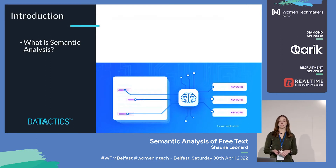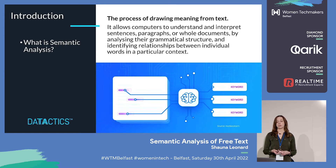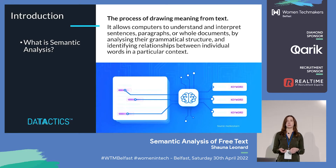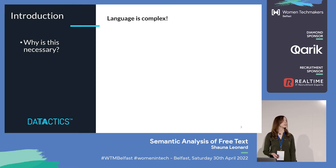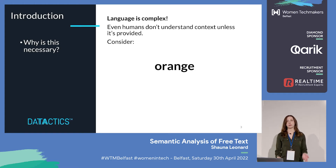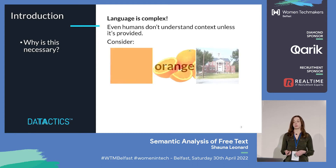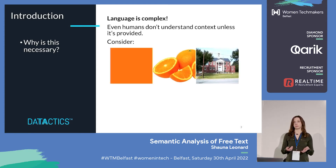What is semantic analysis? The high-level meaning is that it's the process of drawing meaning from text. It allows computers to understand and interpret sentences, paragraphs, or whole documents by analysing the grammatical structure and identifying relationships between words. Why is it important? It's because language is complex. Even humans don't understand context unless it's provided. For example, the word 'orange' could mean anything — the colour, the fruit, or a city in Florida — unless you have context around it.